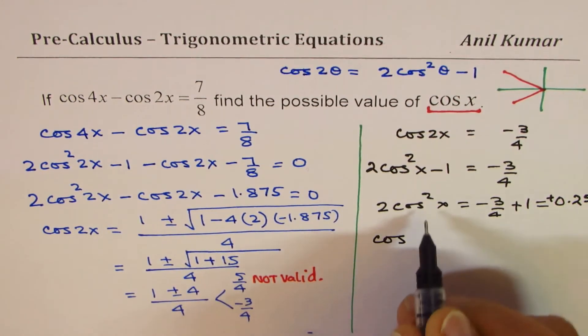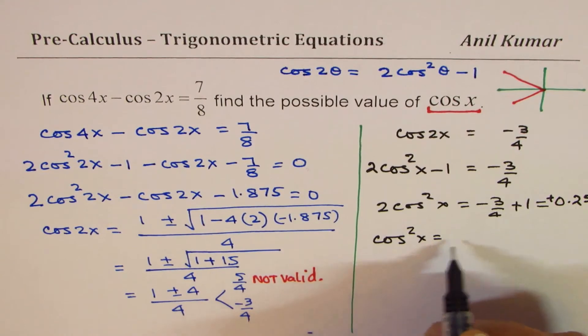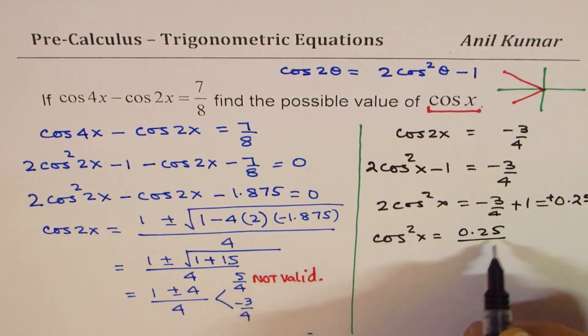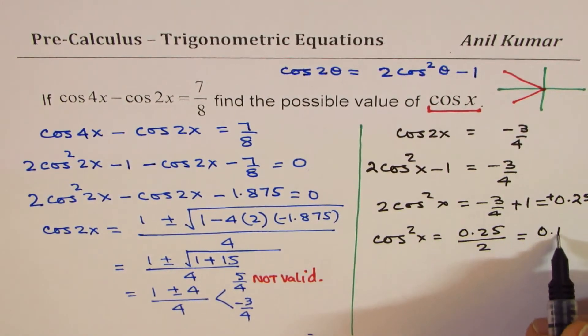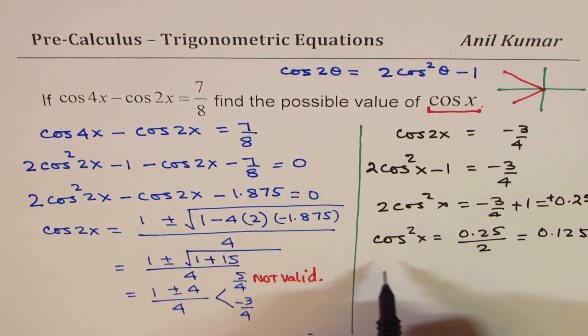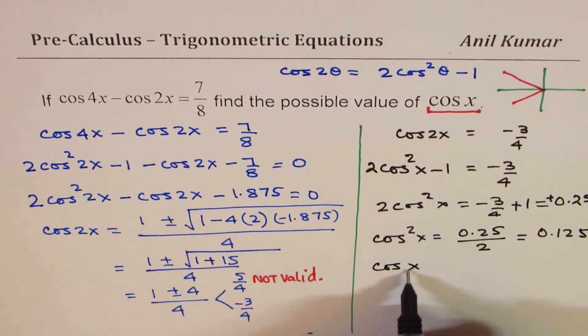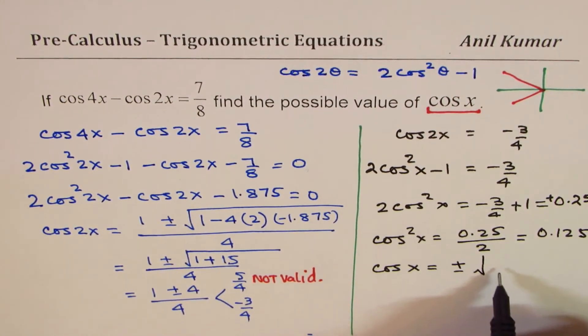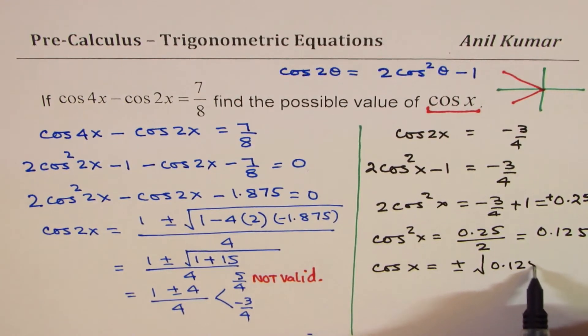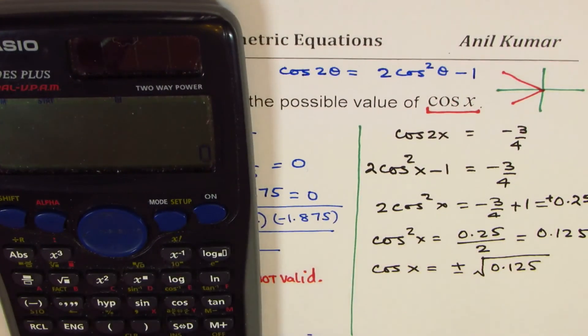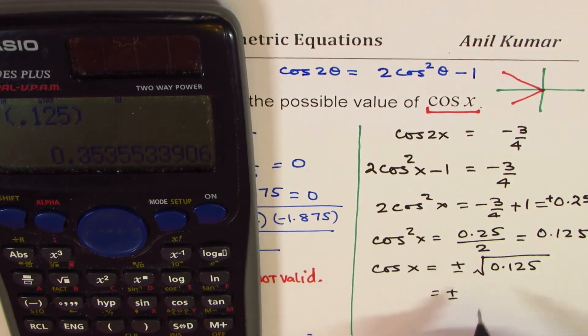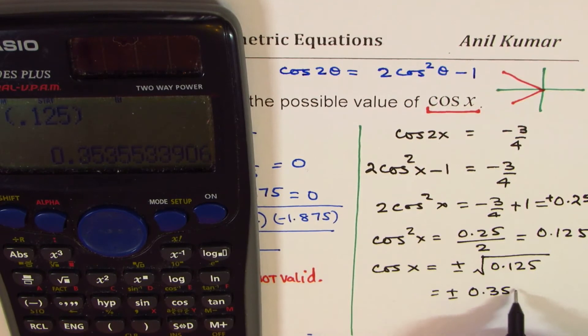From here, cos² x equals 0.25 divided by 2, which is 0.125. Therefore, we get cos x as plus minus square root of 0.125. Let's find square root of 0.125. This is equal to plus minus 0.3535.